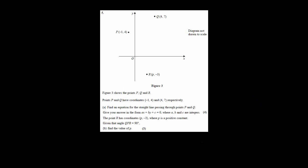Question 5 deals with coordinate geometry. We have to find the equation of a line. We have three points P, Q, R with known coordinates. Part (a) asks for the equation of the straight line through P and Q. We use the point-slope rule: y minus y₁ equals gradient times (x minus x₁), where (x₁, y₁) is a known point on the line.